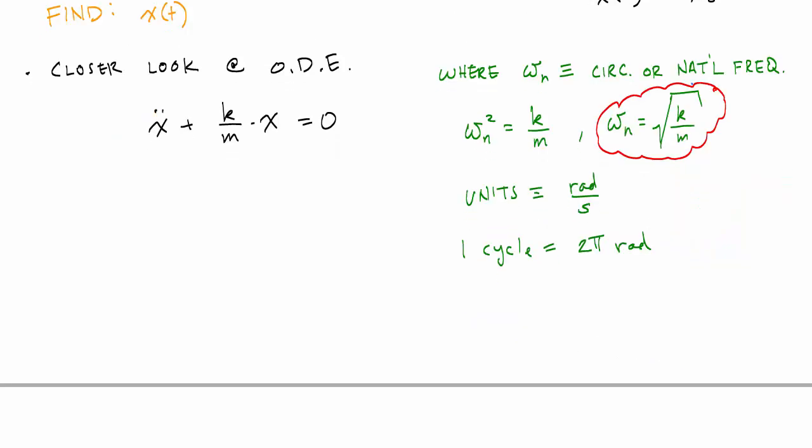If I wanted to express this natural frequency in terms of cycles per second, the symbol I would use would be f, this cursive looking f. Just a conversion: it would be omega n divided by 2 pi. Typically the units of this are cycles per second or revolutions per second.